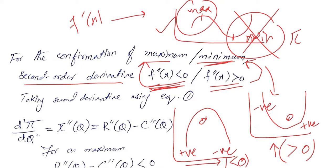We should focus on the diagram of a maximum to understand why the slope is decreasing over various values of x — that is why it is less than zero — and why the rate of change of slope is positive in case of a minimum, because it is turning from negative to positive. This is the mathematical side of maximum and minimum using the second order derivative in optimization.